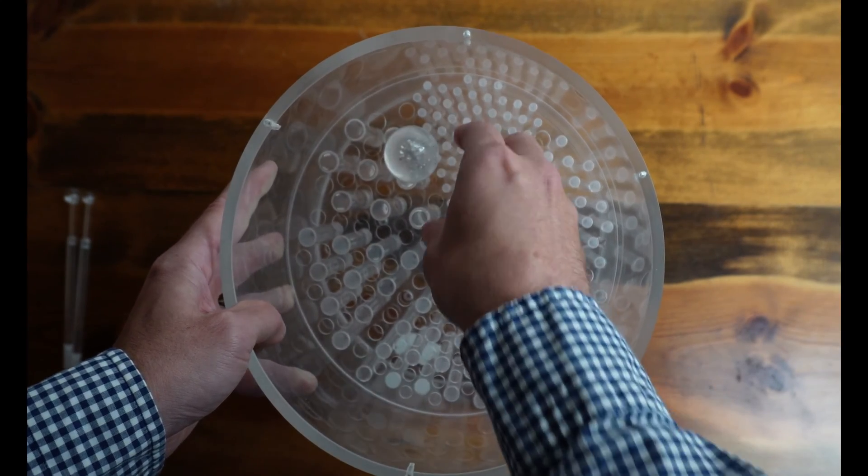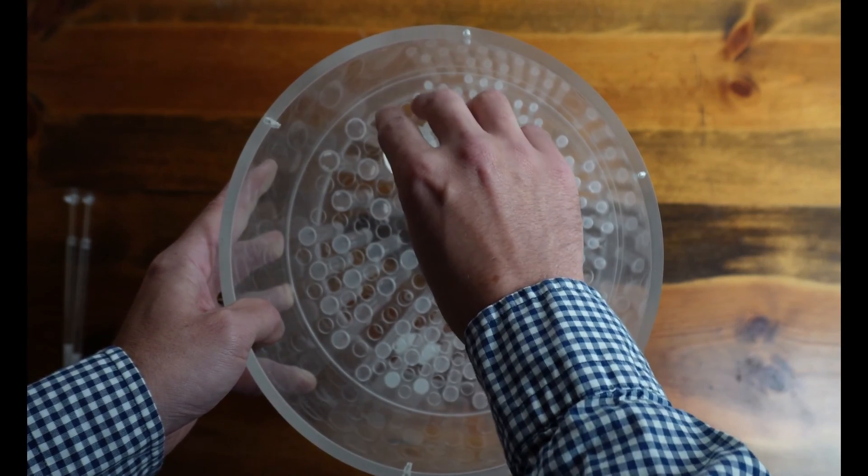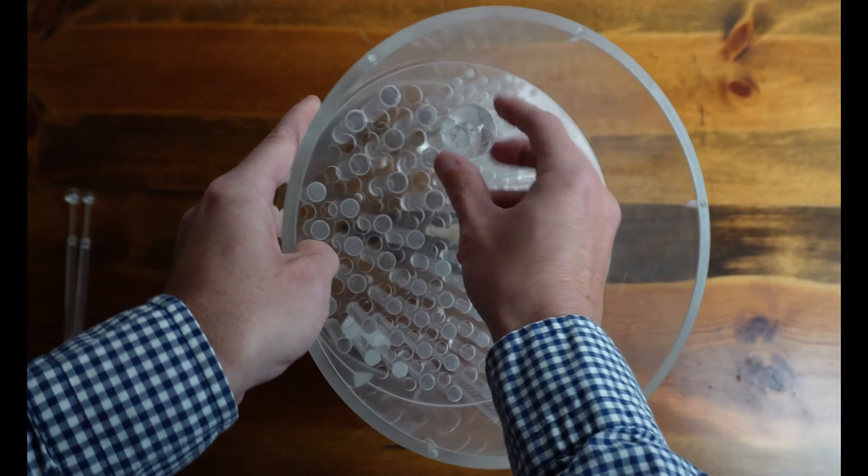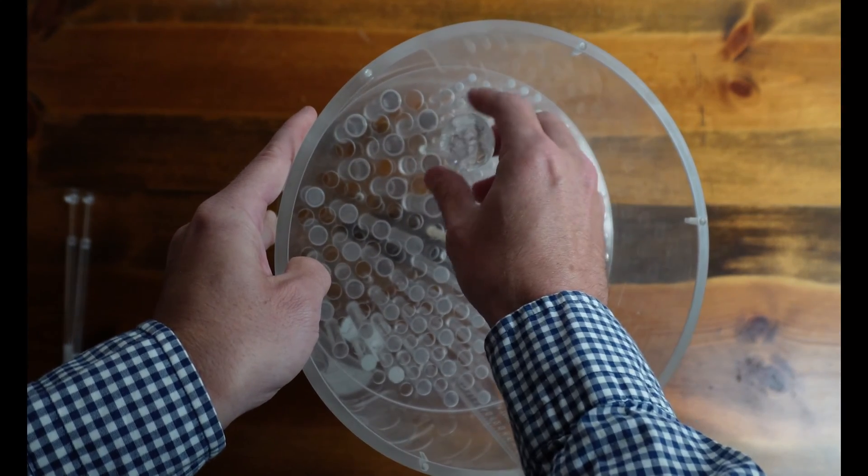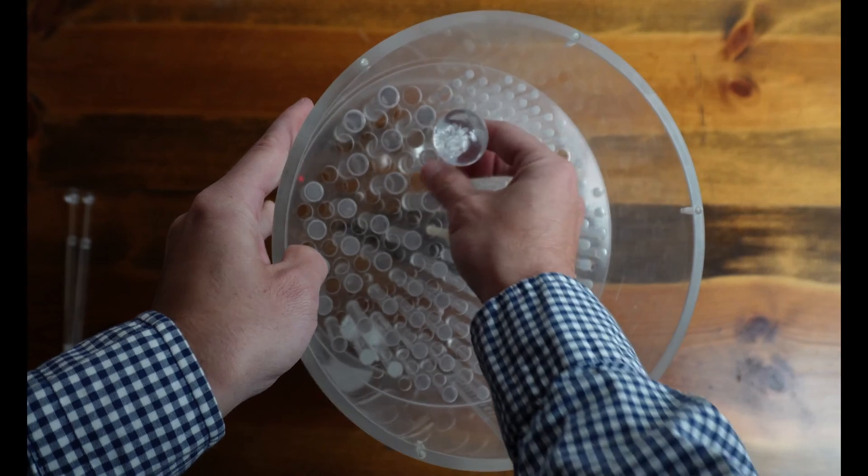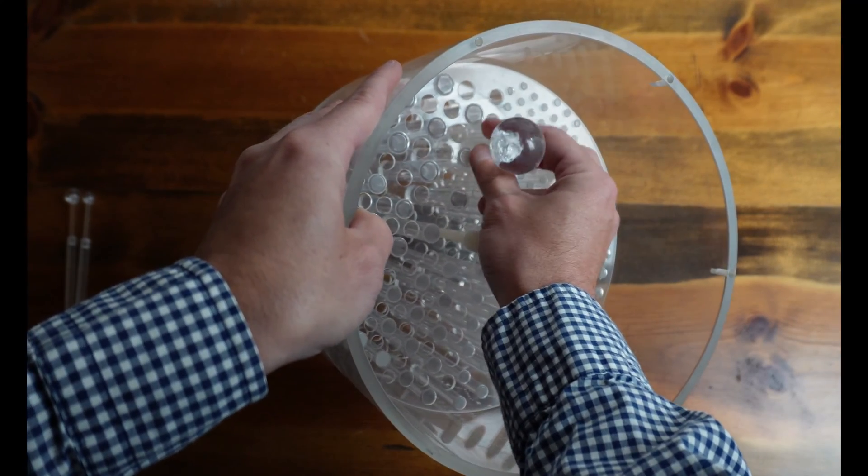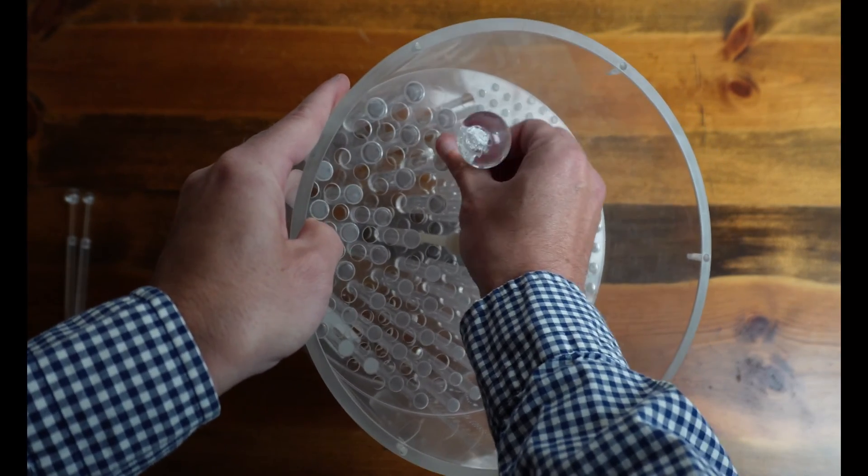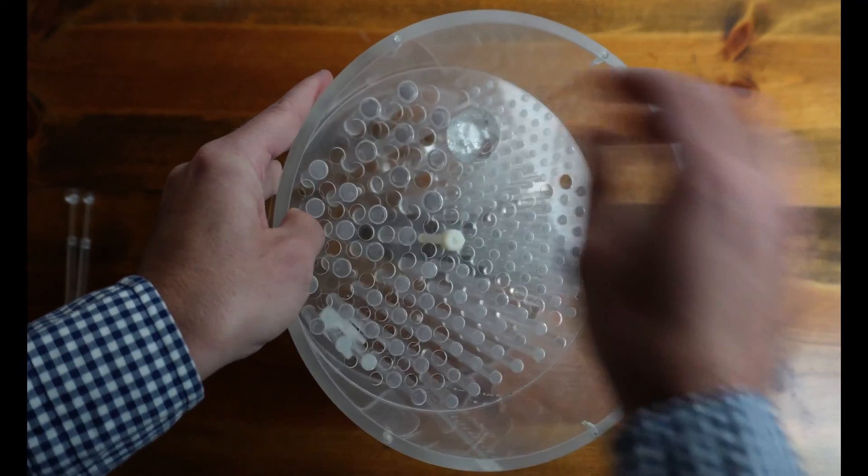I like to screw these in not by grabbing the actual sphere itself. We don't want to grab the sphere and turn the sphere because these can pop off. And so what you want to try to do is grab the stem and rotate the stem to screw the rod in.